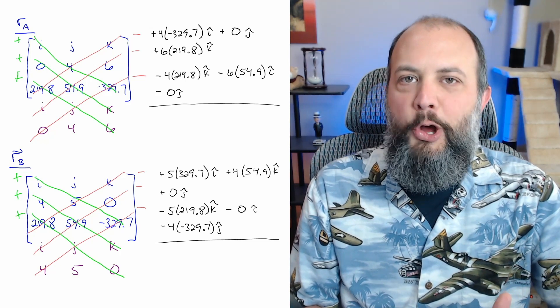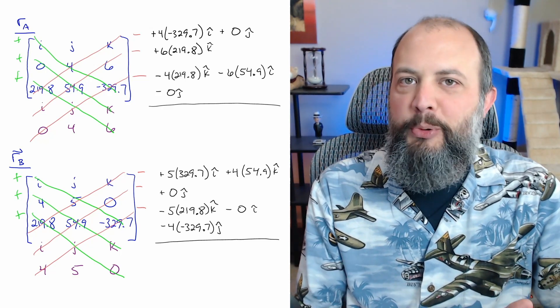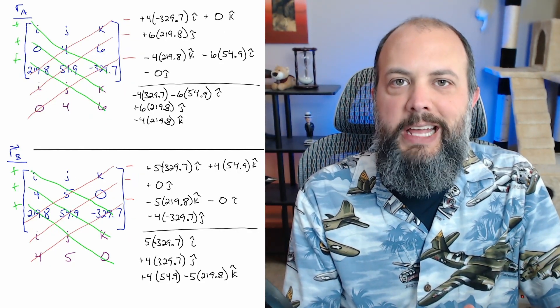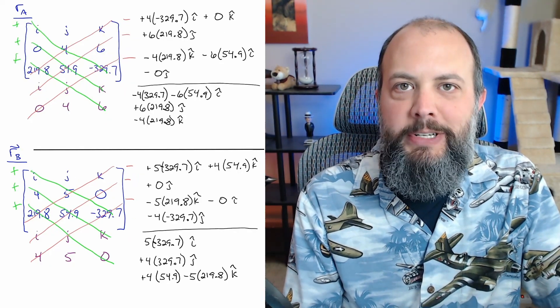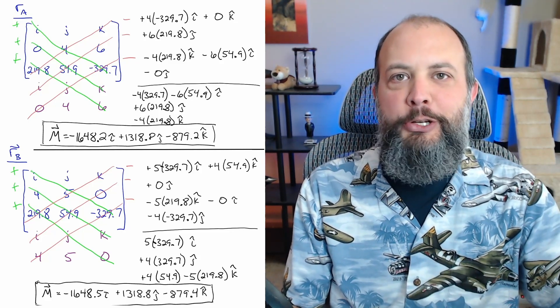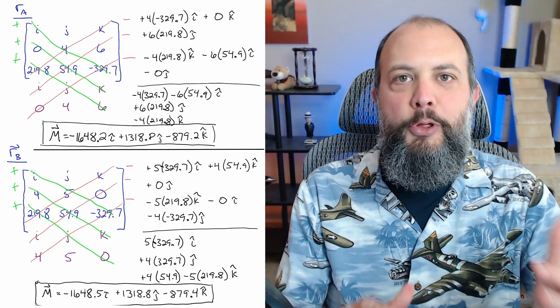So here I've written out all six terms, three that are added, three that are subtracted for each of the two different position vector matrices. Then I cluster terms together based on their i, j, k components. Aside from tiny rounding differences, you can see that no matter which position vector you choose, you still get the same final answer at the end for the moment.